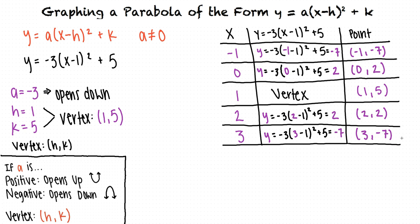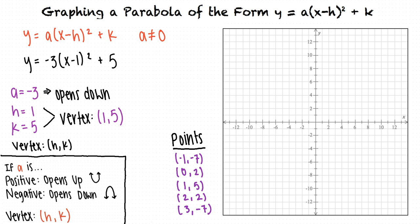From here, we can plot our points. Now we can connect them with the proper parabolic curve. We see that we've now drawn a downward opening parabola with a vertex at the point 1 comma 5.